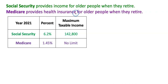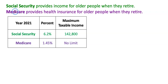Medicare provides health insurance for older people when they retire, and that's usually accessed at the age of 65. Some people who are disabled can get their Medicare before the age of 65.